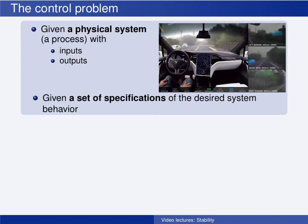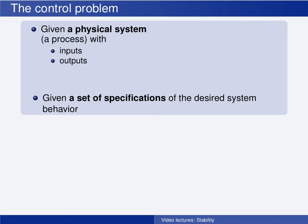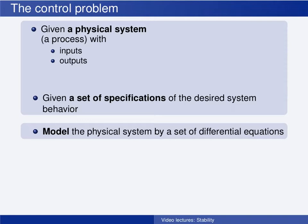The control problem is to find a controller that makes the closed-loop system behave according to these specifications. The first thing we do to solve this control problem is to create a mathematical model of the system, describing the system dynamics by a set of differential equations. In the previous set of video lectures, you learned how to validate such models with respect to existence and uniqueness of solutions.